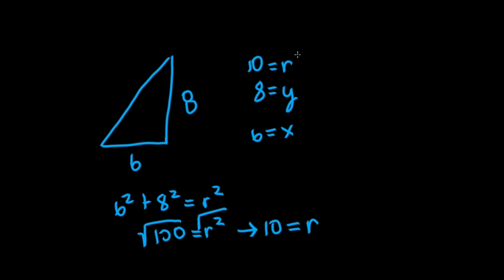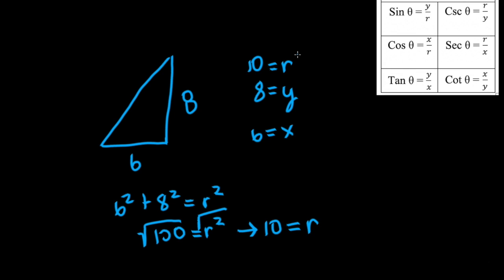Now all that is left to do is to put the correct values in the correct formulas. So the sine of an unknown angle, which is y over r, would be 8 over 10, or simplified as 4 over 5. The cosine is x over r, which is 6 over 10, which we could also simplify as 3 fifths. The tangent is y over x, which is 8 over 6, which we can simplify to 4 over 3.